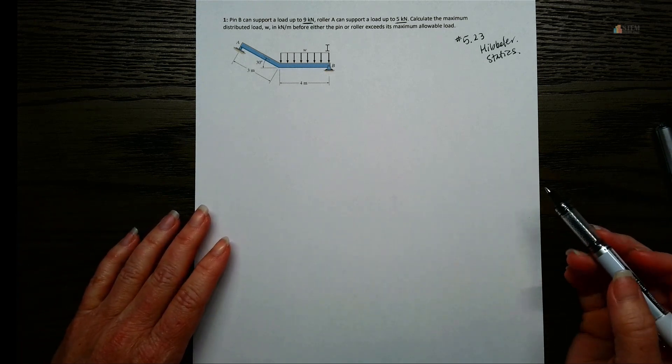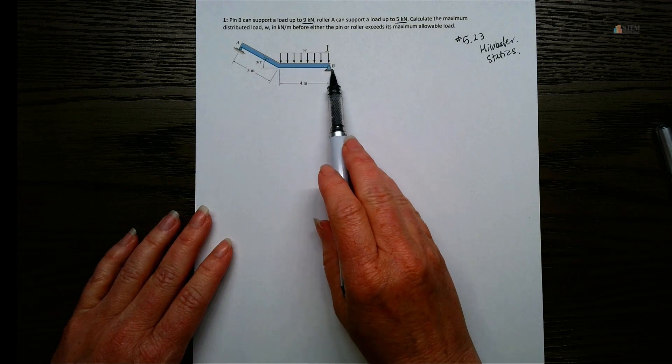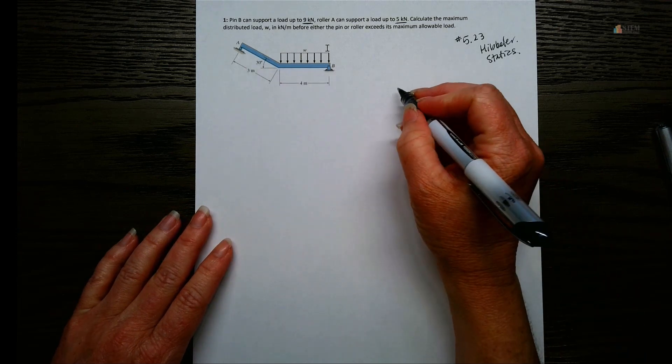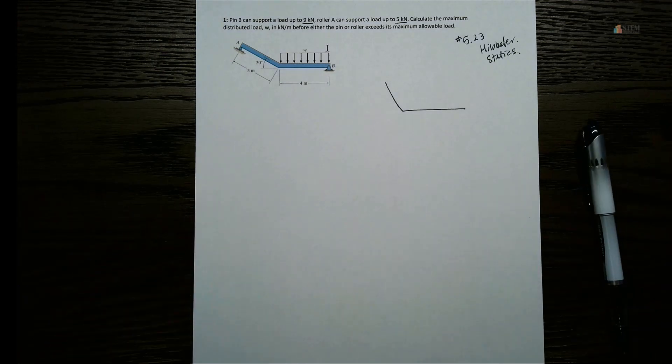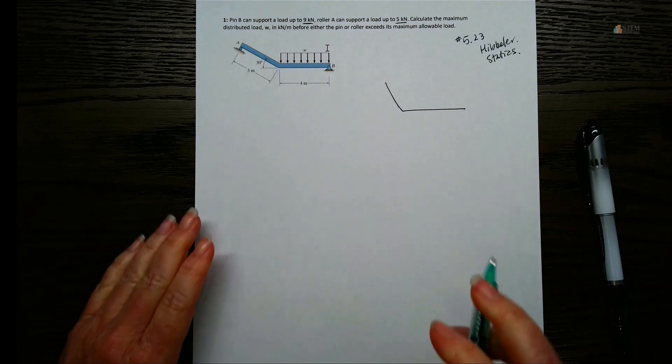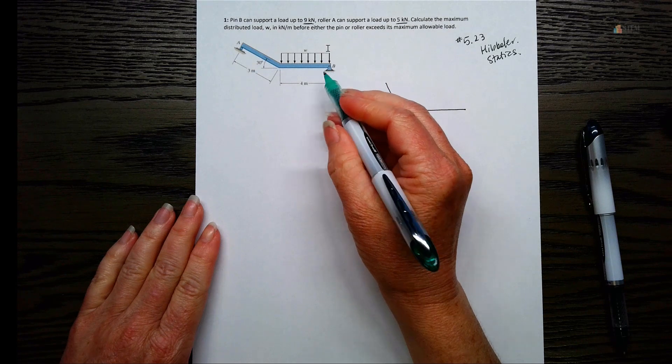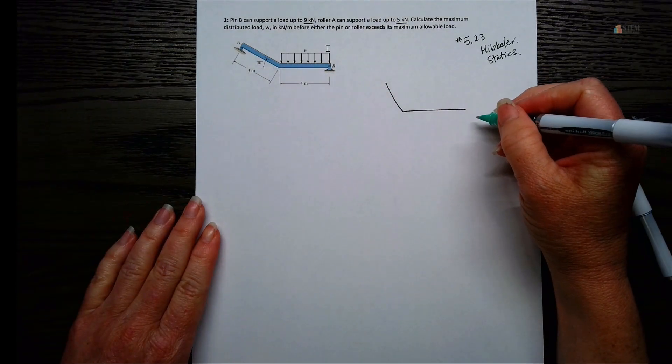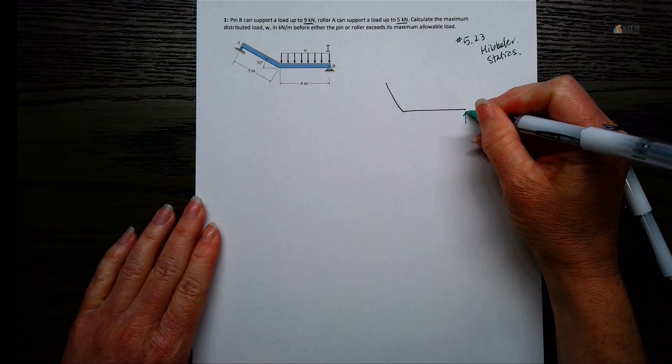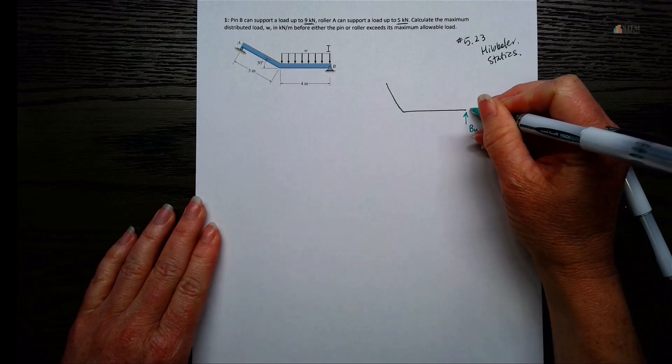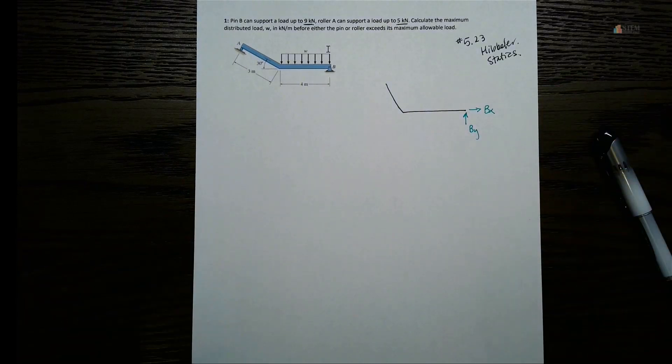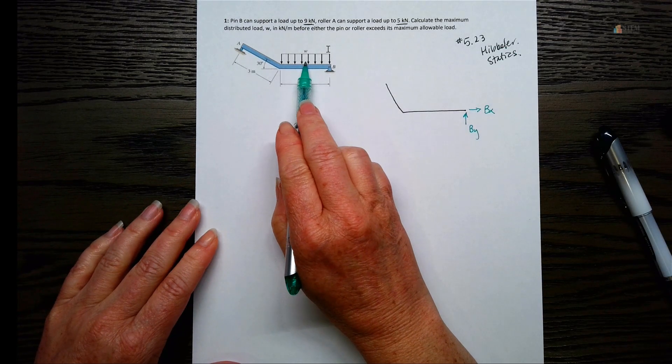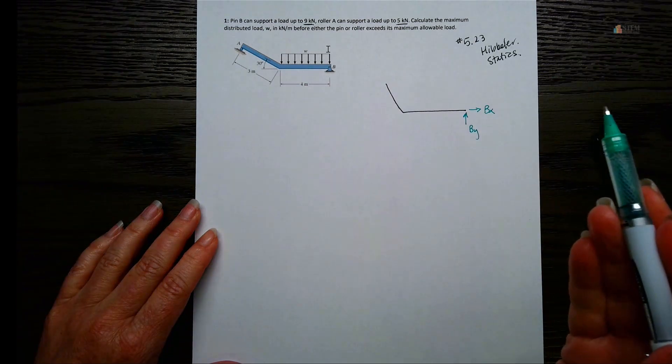The only thing different here is we've got a little bit of wording differences and the numbers are different. Pin B is here and it can support a load of up to 9 kilonewtons. Roller A over here can support a load up to 5 kilonewtons. And we want to calculate the max distributed load W in kilonewton per meter before either the pin or roller exceeds the max allowable load.